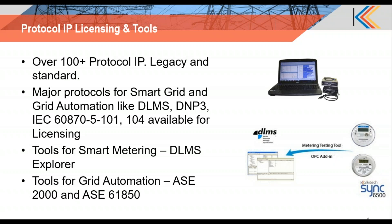This includes over 100-plus protocol intellectual property, both on the legacy and standard protocols. We have our own protocol libraries for the majority of standard protocols in the smart grid and grid automation areas — examples include DLMS, DNP3, IEC 101, and IEC 104. All these protocols are available for licensing. Together with the library license sale, our division will help customers in getting these implemented on the targeted device as well as getting the certification.